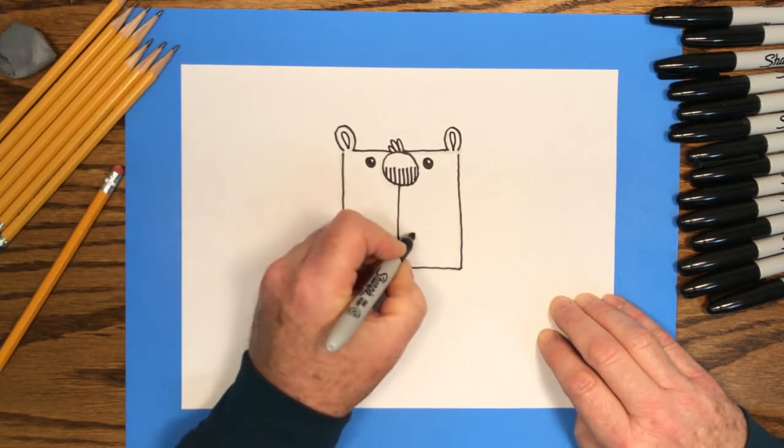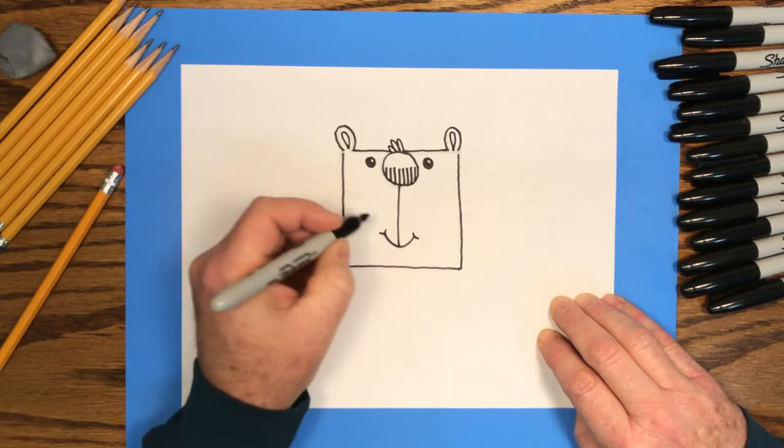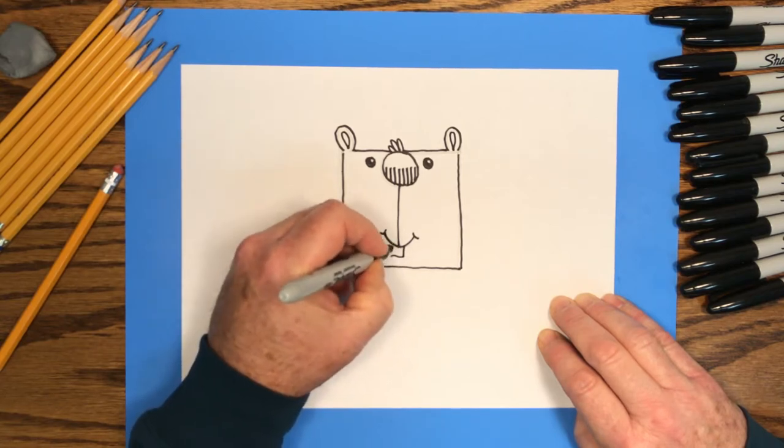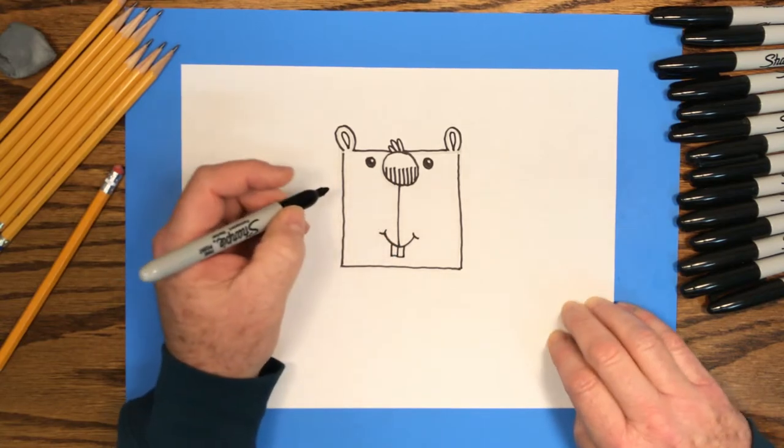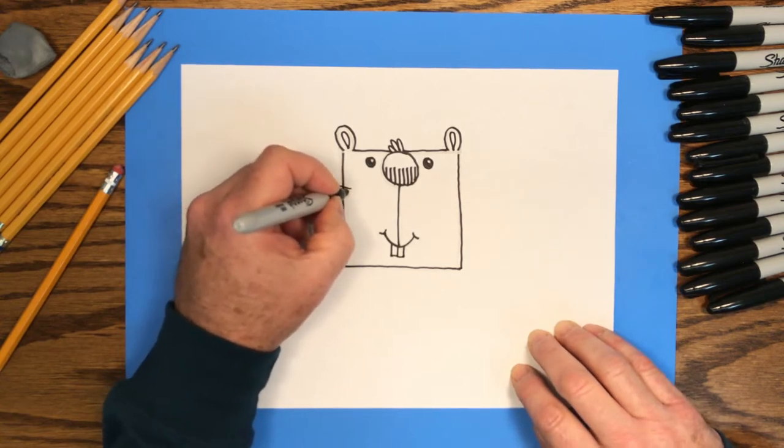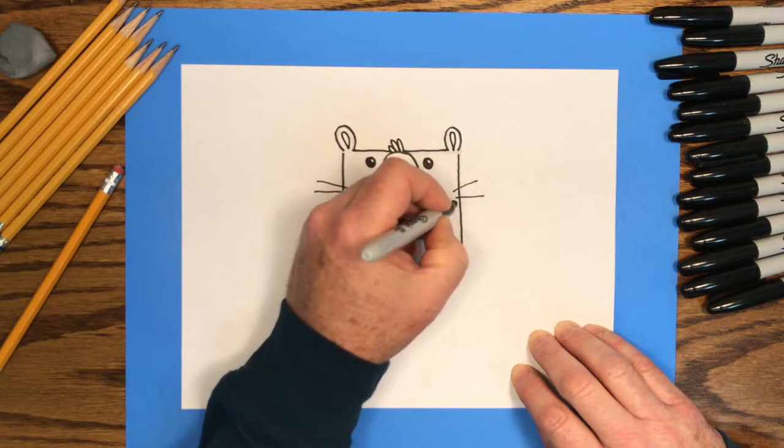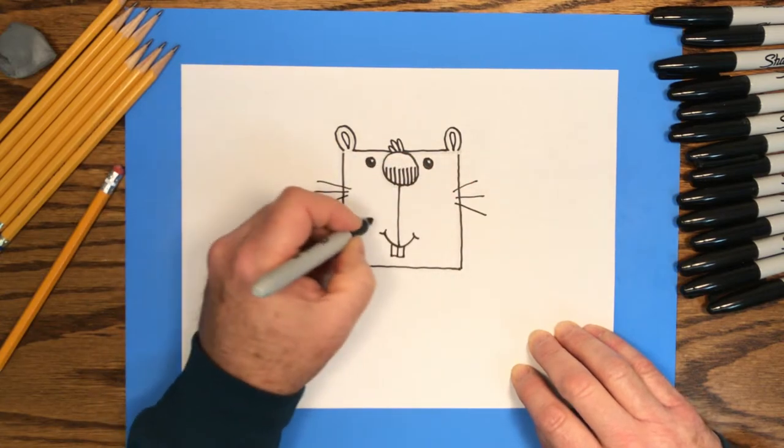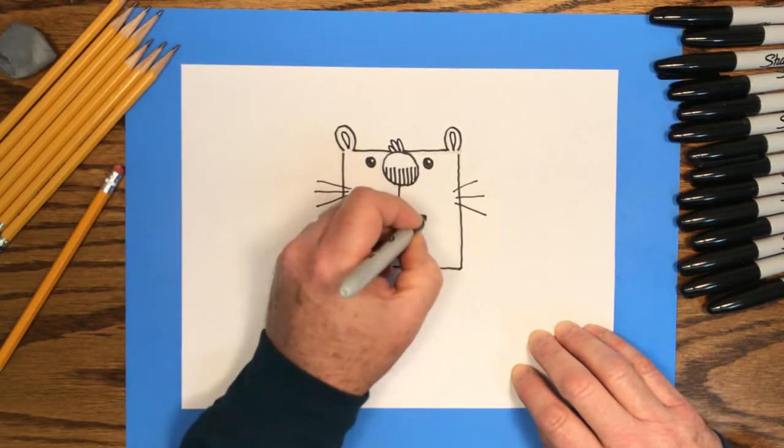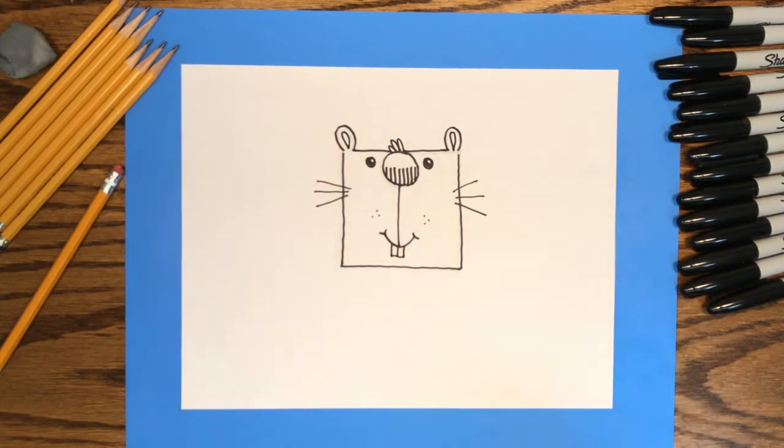And I'll put a few little cheek lines on the ends of the mouth, and then a couple of teeth. We'll add some whiskers to the sides of this hamster. One, two, three on each side, and a couple of whisker dots on each cheek. Now we're finished with the black marker drawing.